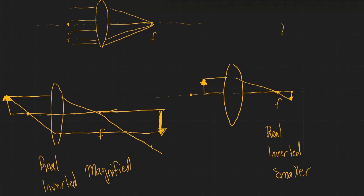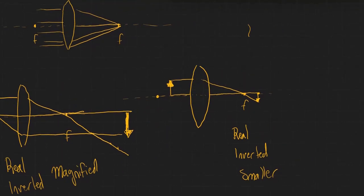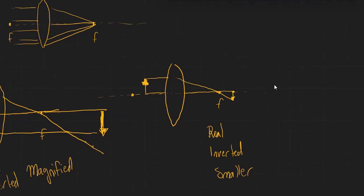The last situation to be aware of with a converging lens is what happens if we have an object precisely at the focal point. The answer is that we have no image. It's just easier to understand that there is no image when the object is precisely at the focal point of the lens.